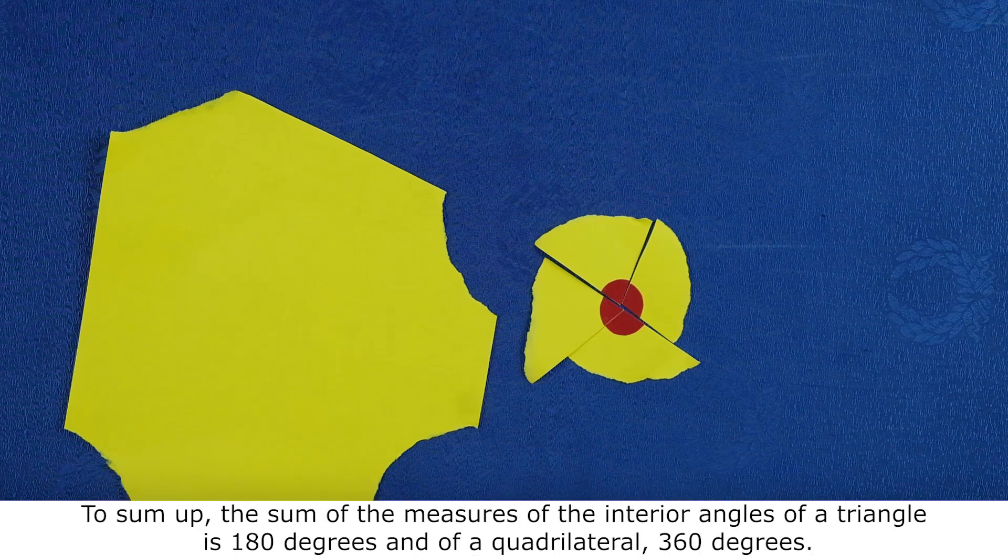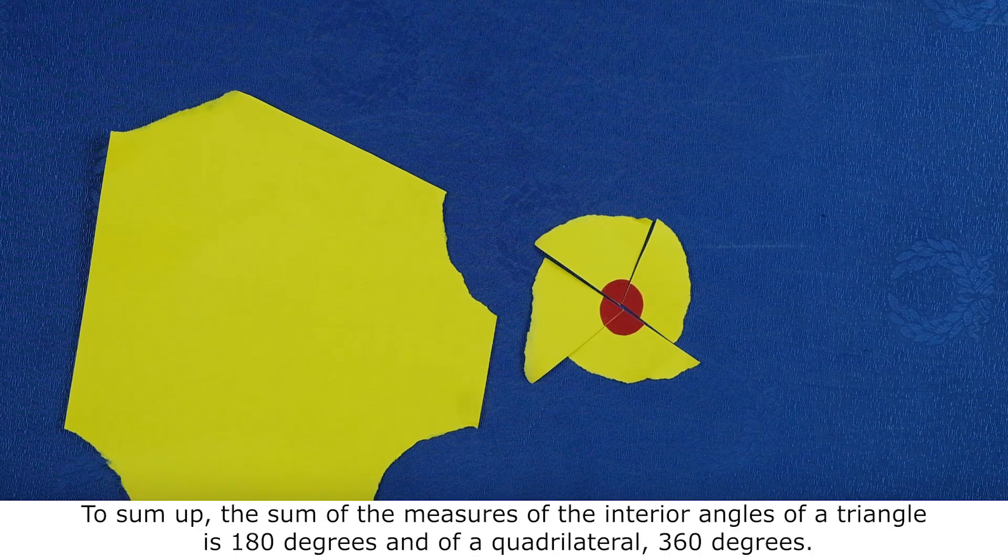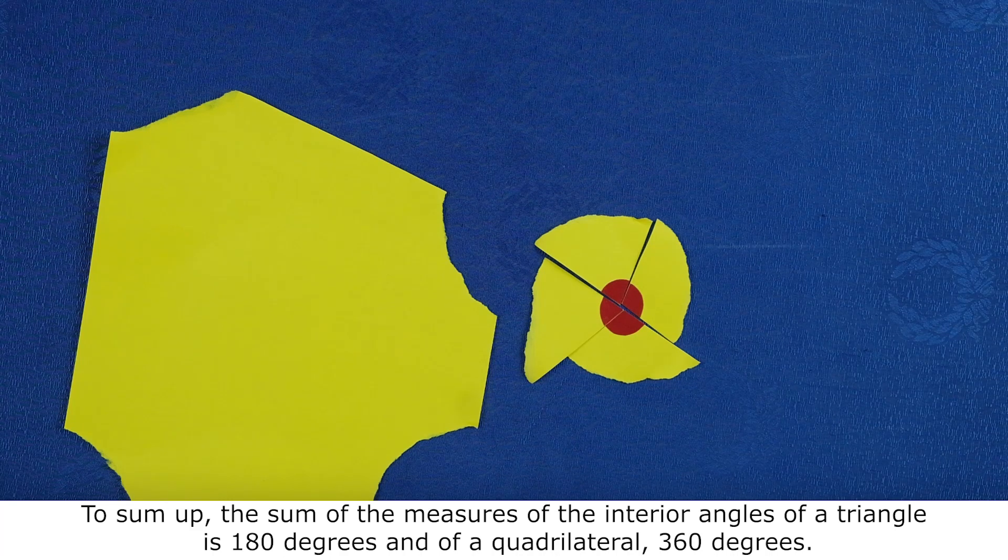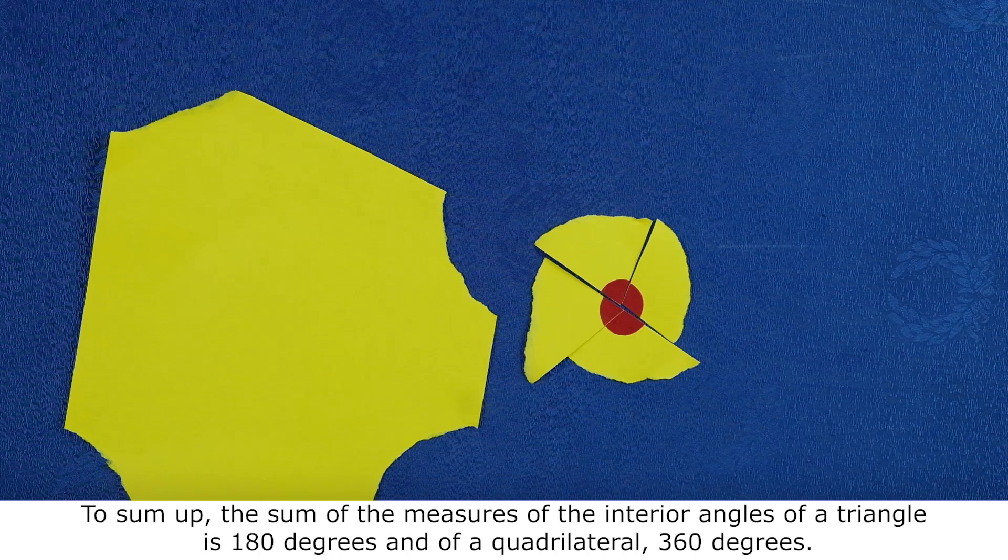To sum up, the sum of the measures of the interior angle of a triangle is 180 degrees and of a quadrilateral is 360 degrees.